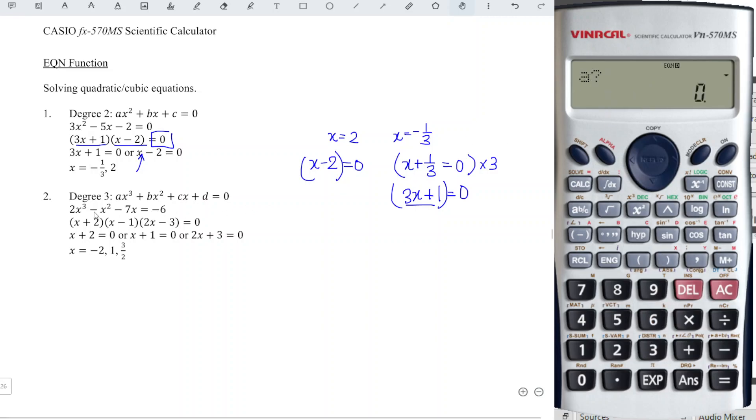And we should input 2. Coefficient of x cubed is a, 2, then b is negative 1, c is negative 7. And for the constant, must be on the left-hand side. So which means that we have to bring this to the left. So we have minus, bring to left become plus, and press equal.